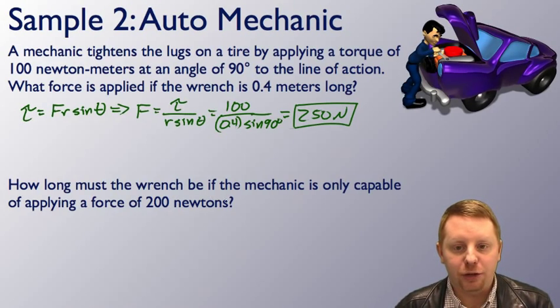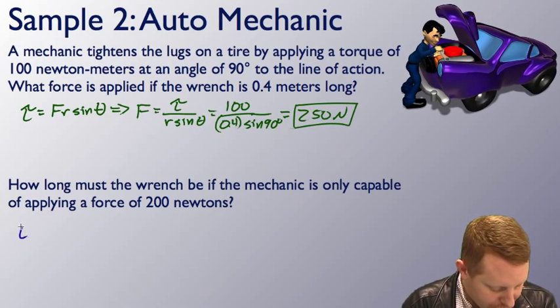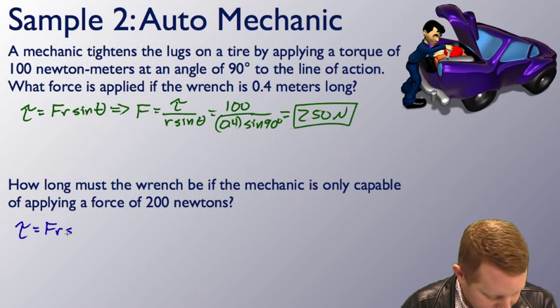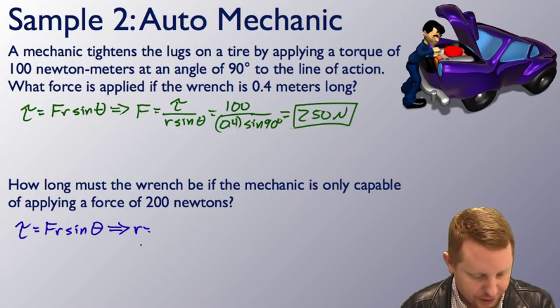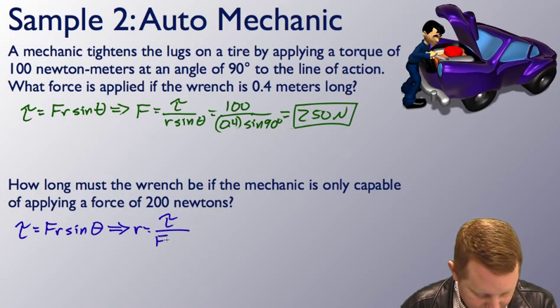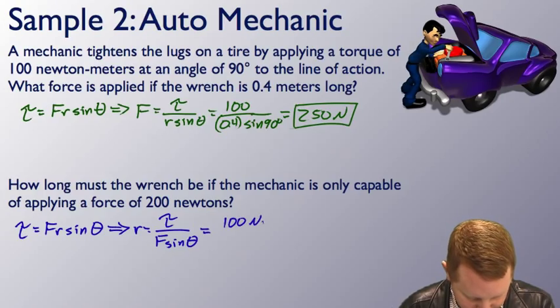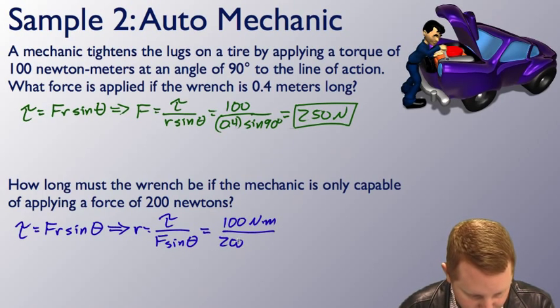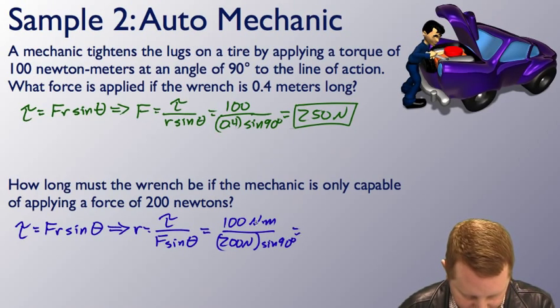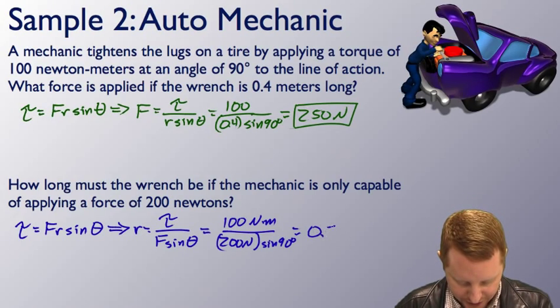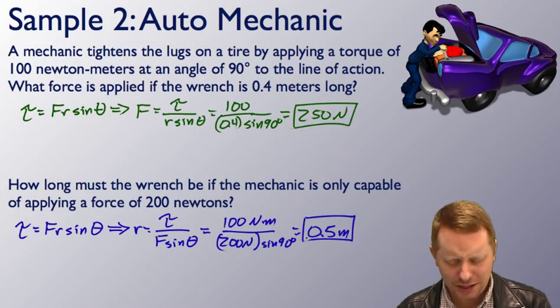How long must the wrench be if the mechanic is only capable of applying a force of 200 newtons? We'll start with our same equation, torque equals FR sine theta, but now we need to know what the lever arm is going to be. If our torque is 100 newton-meters, our maximum force is 200 newtons, times the sine of 90 degrees which is 1, 100 over 200, that's just going to be half a meter. So our wrench has to be just a little bit longer. That's a pretty big wrench.